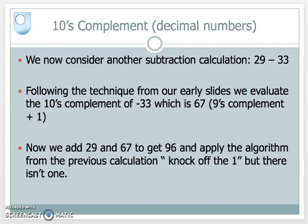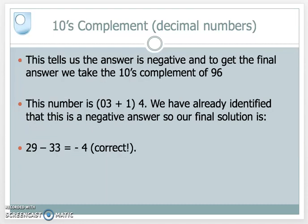Now add 29 and 67 together — we get 96. Apply the original algorithm: knock off the leading 1, but there isn't one. So this tells us the answer is negative. To get the final answer, we take the 10's complement of 96. What do we add to 96 to bring it up to 99? We add 3 to the 6 and nothing to the 9 — that's the 9's complement. Add 1 to it to get the 10's complement: 3 plus 1 is 4. We've already identified the answer is negative, so the final solution is minus 4. 29 minus 33 equals minus 4, which is correct.